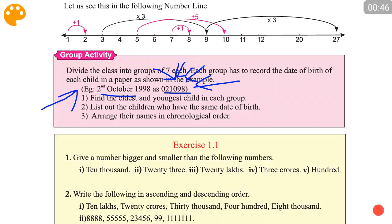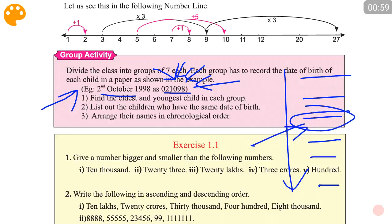If you write all the children's dates of birth as numbers like this for 7 people, you have to find the eldest person. Who is the eldest? And then also you have to find the youngest. Who is the youngest among this?